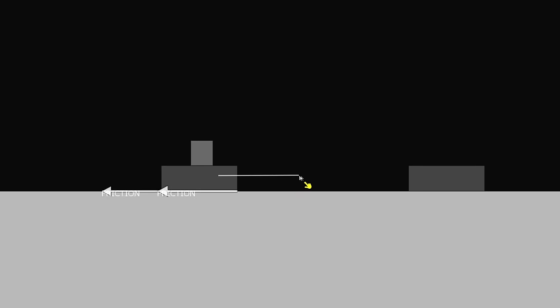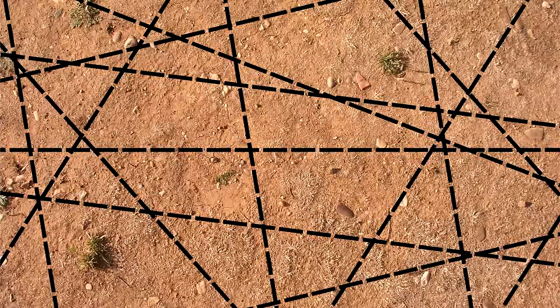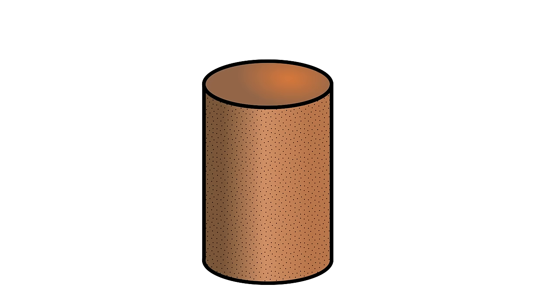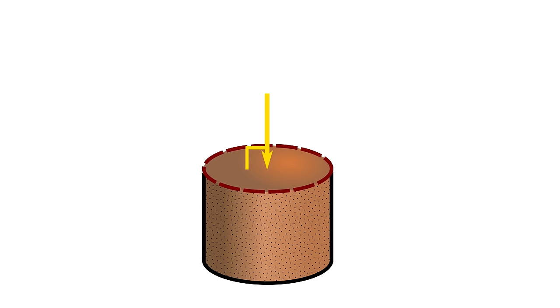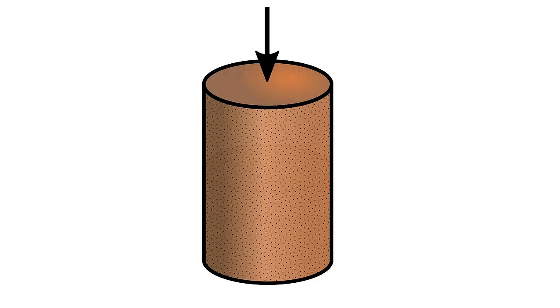Just like the simple block on a plane, the shear strength of soil depends on the internal forces too. But unlike that example, soils have an infinite number of potential sliding planes all at once. Let's look at a sample of soil and apply a vertical force. If you analyze a horizontal failure plane, our force is completely perpendicular, or normal, so it's increasing the shear strength of the soil. But if we look at an angled plane, things change.